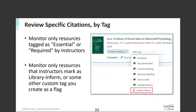Alternatively, you can set up a custom tag like 'Library Review' or 'Library Inform.' The instructor reviews all citations themselves and only applies this custom tag when they want library staff to check something, which then appears on your task list. This puts the burden of checking on the instructor, but for institutions with very limited library staff and experienced instructors, this approach can work well—automatically completing everything unless the instructor specifically flags it for review.